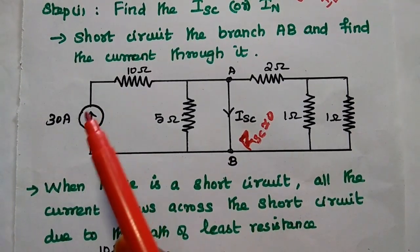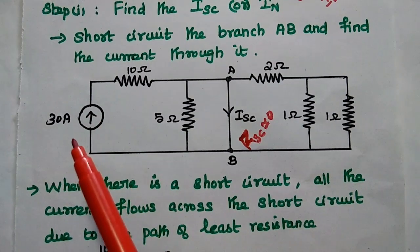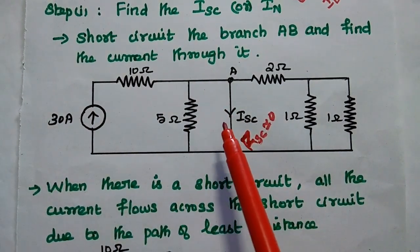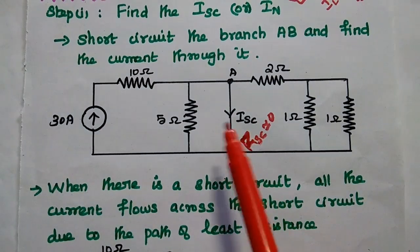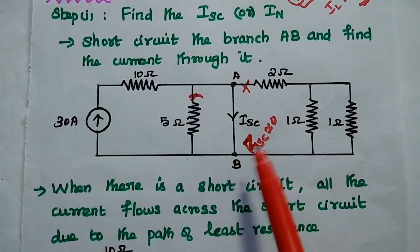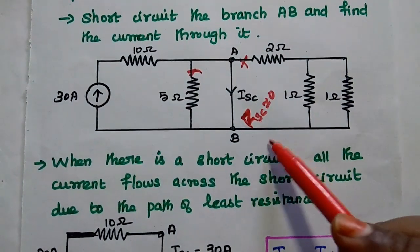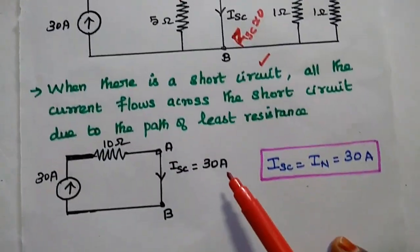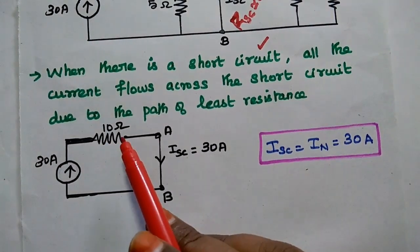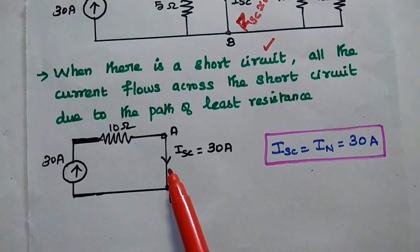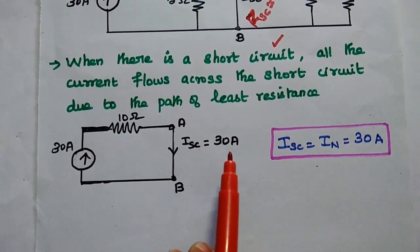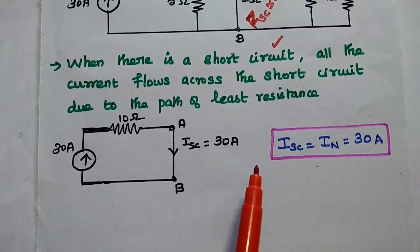So here, whatever current is coming from the 30 ampere current source — that entire current flows through this short circuited path, not through the 5 ohm or any other path. So we can consider the same circuit as a 30 ampere source in series with 10 ohm and then the short circuited path. Here we get the entire 30 ampere as Norton's current.